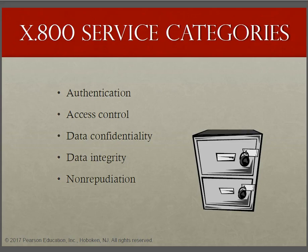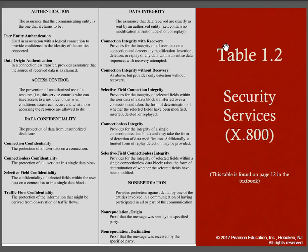The five categories are: authentication, access control, data confidentiality, data integrity, and non-repudiation. This table is very useful — X.800 divides the services into five categories and 14 specific services. You can see the services for authentication, access control, data confidentiality, data integrity, and non-repudiation. For authentication, the assurance that a communicating entity is the one that it claims to be is what we call authentication.